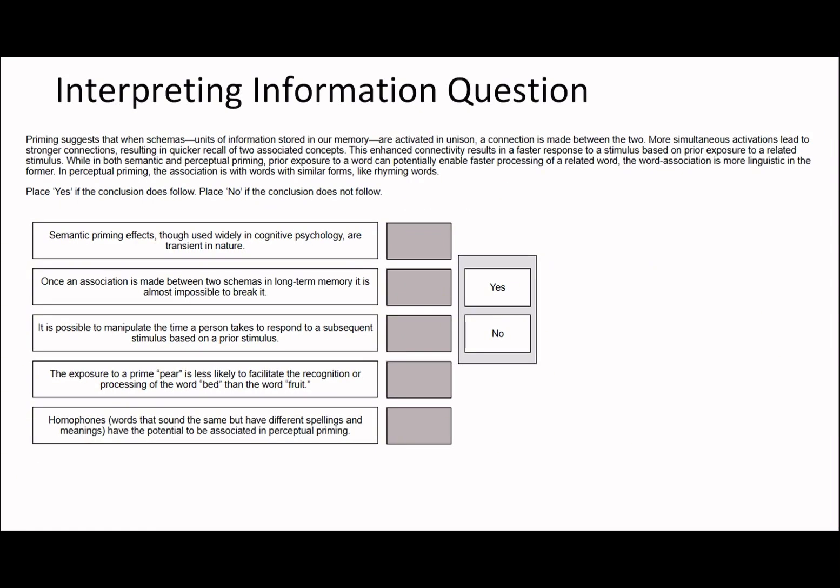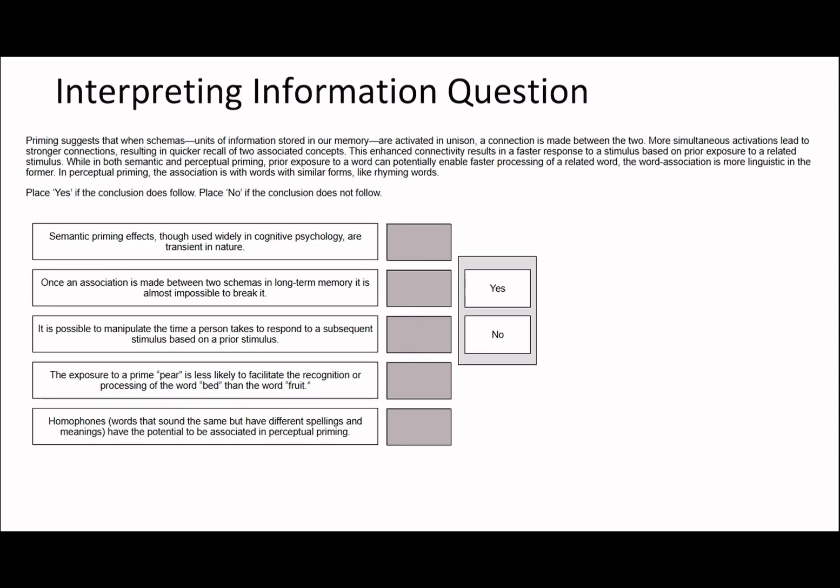Priming suggests that when schemas, units of information stored in our memory are activated in unison, a connection is made between the two. This is probably an example of a passage I probably would have skipped. If you guys haven't watched my decision-making strategy video, you can find it under my general UCAT guidance playlist where I talk about the decision-makings you should skip and why. This is one of the first where I read and I kind of think, oh my days, this looks kind of challenging. And I don't really think I'll be able to process it well. So I'll just come back to it. But once again, for a more specific order on which questions I would do, check out that video.